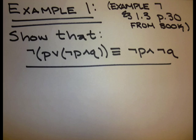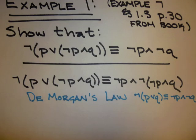Example 1, which is example 7 from section 1.3 of our book: show that the negation of (P or (not P and Q)) is logically equivalent to not P and not Q. Using De Morgan's law we can see that the negation of (P or Q) is equivalent to not P and not Q.